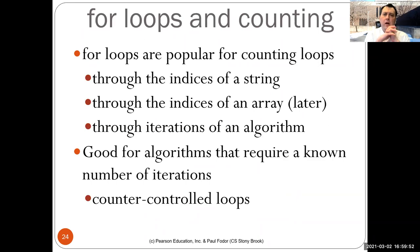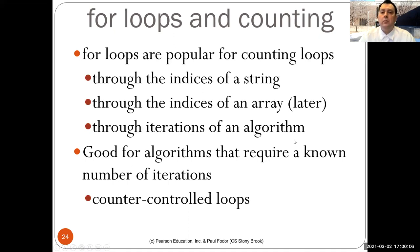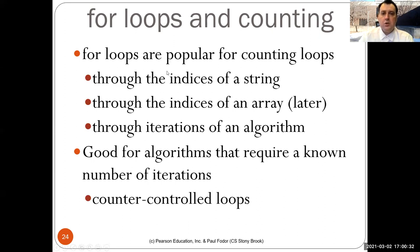For loops are popular for iterating through the indices of a string or an array. Later this week I'll show you what an array is and how to iterate through it. For example, if you want to implement an algorithm that prints a string's characters in reverse order, for loops are well-suited because you know the exact number of iterations — the length of the string. They are ideal for counter-controlled loops.